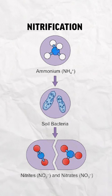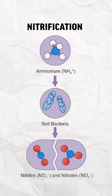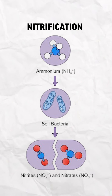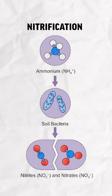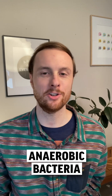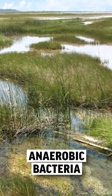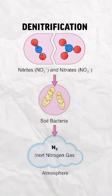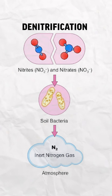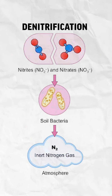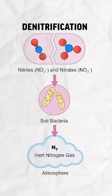Now, this ammonia can also be converted into nitrite and then nitrate by nitrifying bacteria. And finally, anaerobic bacteria living in waterlogged soils or in lakes can convert this nitrate into nitrous oxide and eventually back into N2 gas.